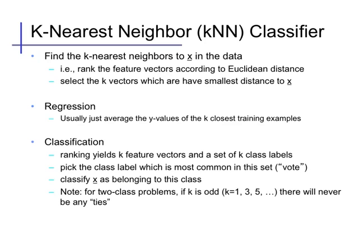For classification, the y-values are discrete, so the ranking gives the k-closest and a set of k-class labels associated with them, and we usually use a majority-vote method, so we pick the class label that's most common from that set.